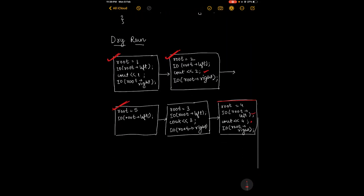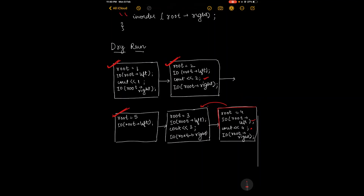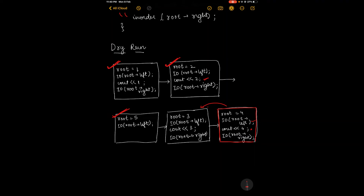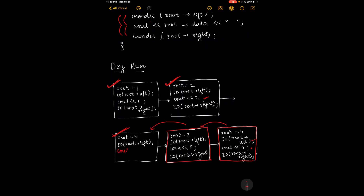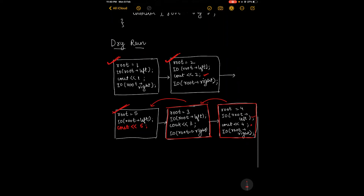After 4 is printed, in-order root right: there is no right child of 4, so we return. The 4 block is fully executed. Coming back to 3, this block is also fully executed. We go back to 5, and the next statement — cout 5 — is now executed. This statement had not occurred earlier because of the recursive function call just before it. After cout 5, we call in-order root right.